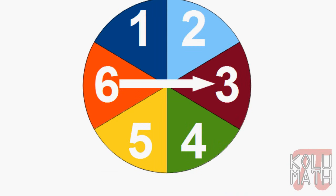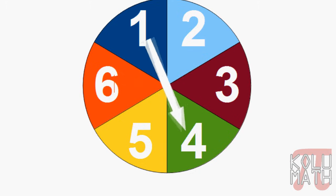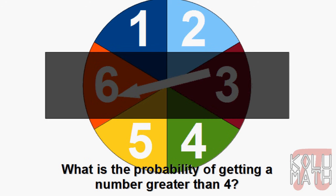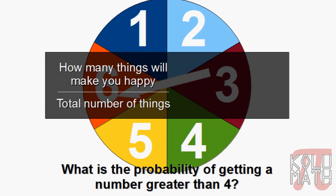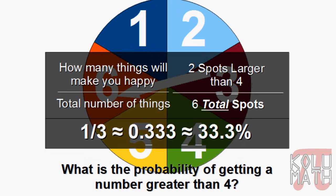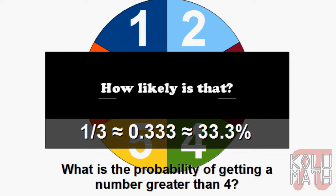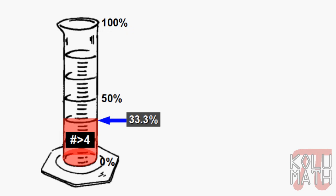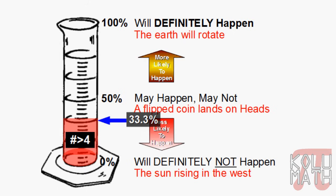Let's take a look at another example. We've got a spinner here. The question is: what is the probability of getting a number greater than four? Looking at our fraction — the number of things that will make us happy — we've got two spaces, five and six, that are greater than four. We have a total of six spots to land on. Two over six gives us about 33.3%. Checking how likely that is on the probability meter, it's below 50-50, somewhere between that and definitely not happening — so it's very unlikely.